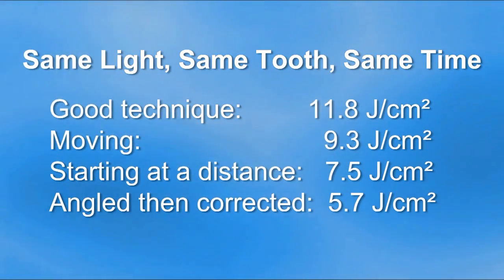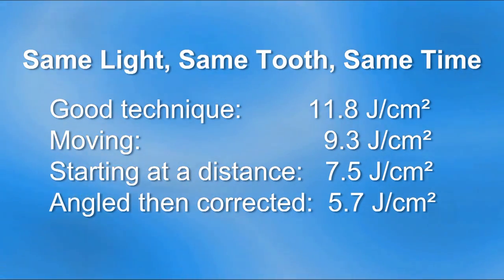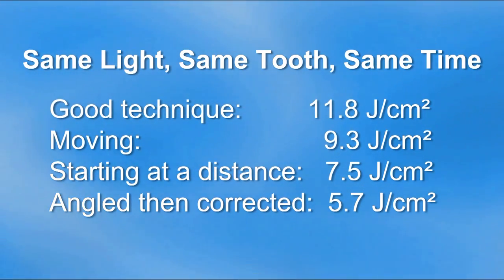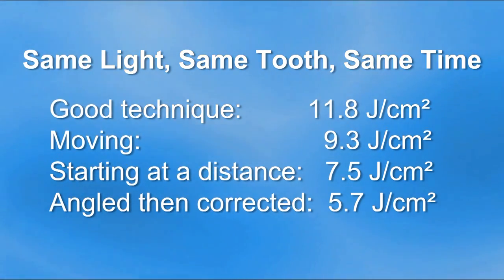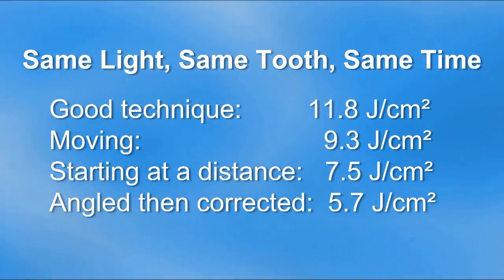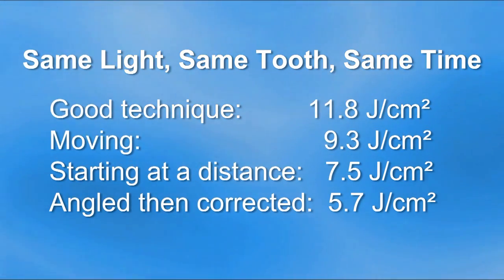This shows the effect of using the same curing light to deliver energy to the same preparation but using different light curing techniques. You've just seen that the energy ranges from 11.8 down to 5.7 joules per cm².